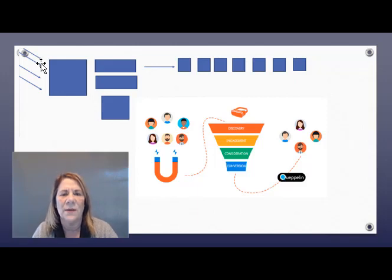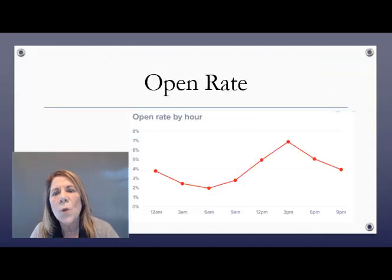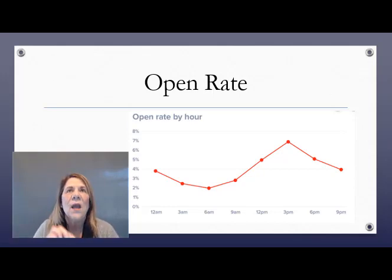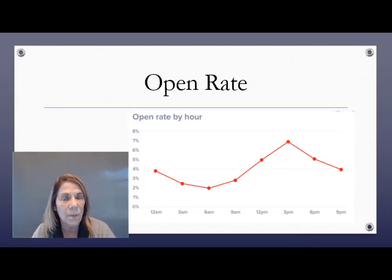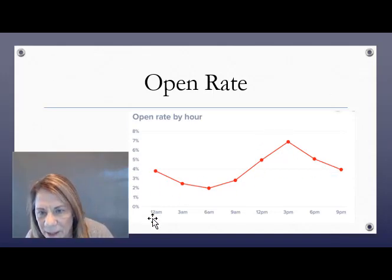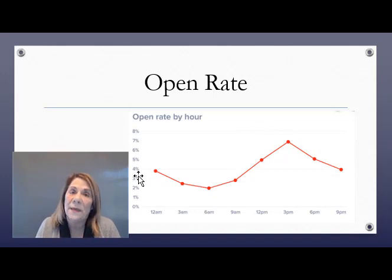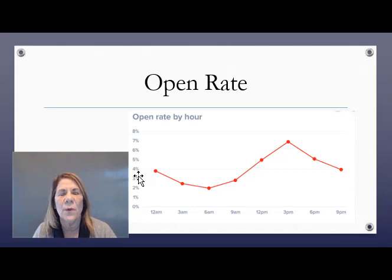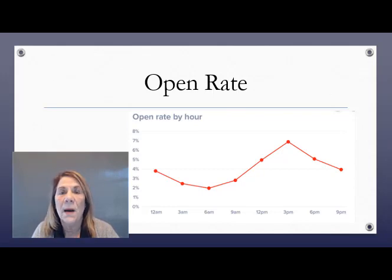There is data available to you and usually it's right in the autoresponder that you're using. The first metric I want to look at is open rate. Some autoresponders will have an open rate by the hour, so you can see when people are more likely to open your emails. In this example you can see the chart — it's early morning, so there are people opening it, possibly from overseas, and you're seeing a sequence of when people open your emails.